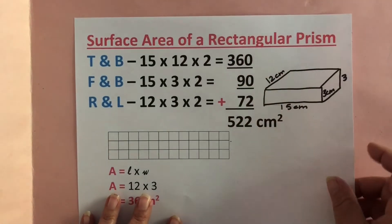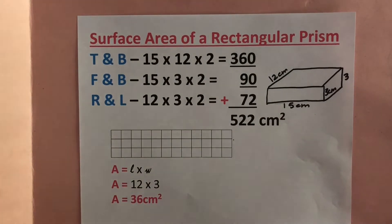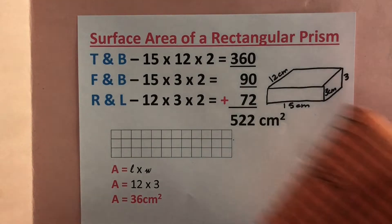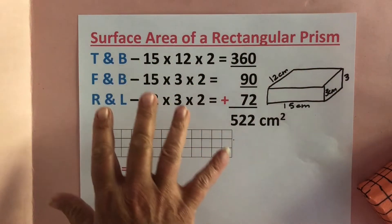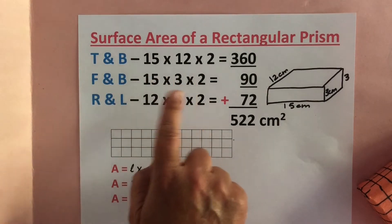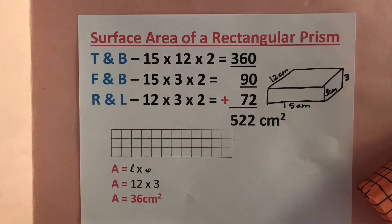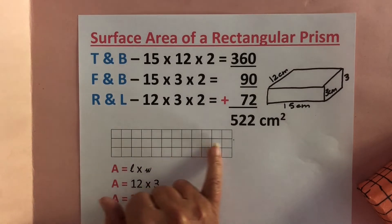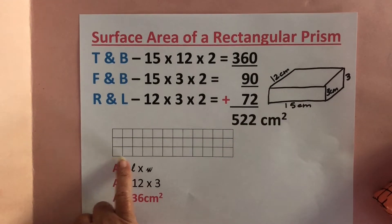Before we start with triangular prisms, we want to build on knowledge that we already have — and that knowledge is discovering the surface area of rectangular prisms. I've drawn a rectangular prism here and I've also got a 3D rectangular prism here to show you. So I'm hoping that when you see this kind of top and bottom, front and back, right and left, it refreshes your memory of when we did surface area of rectangular prisms in class together a couple of months ago. Let's review how to find the area of a rectangle.